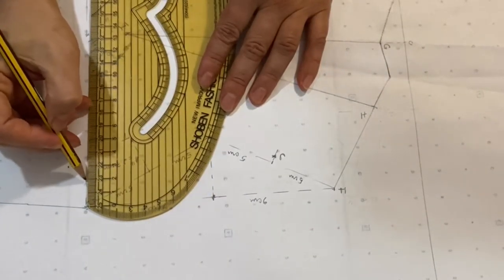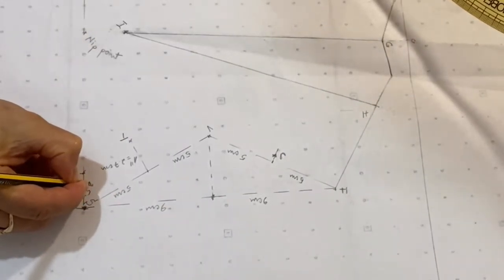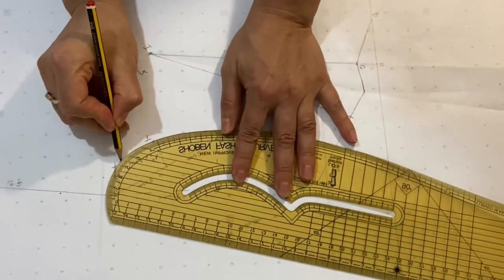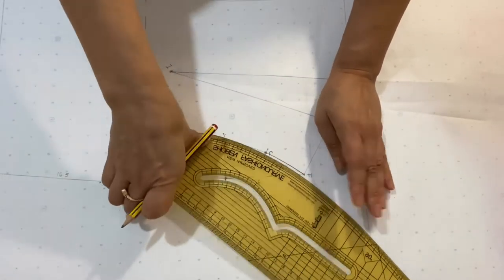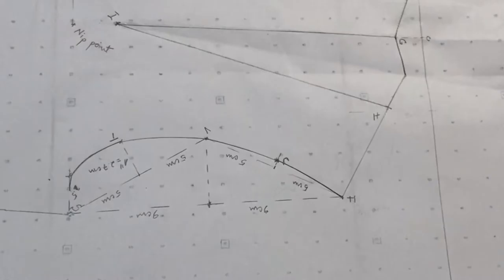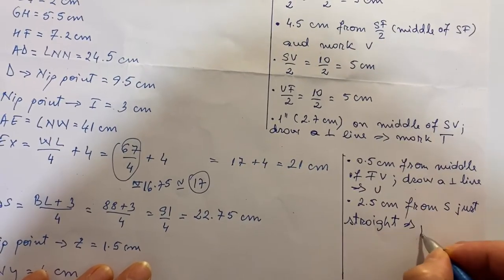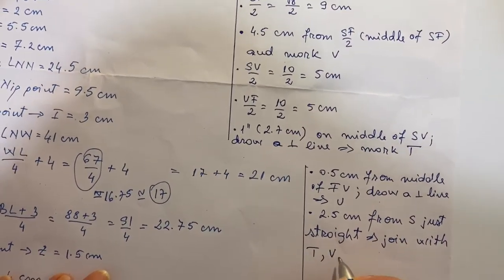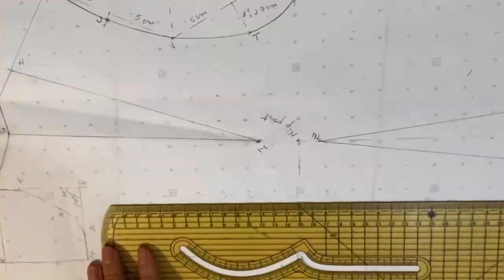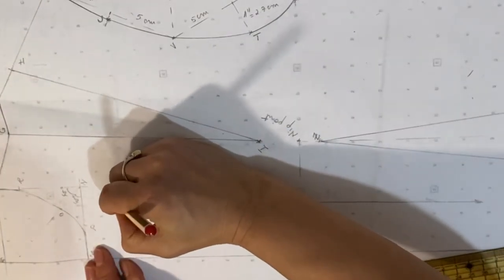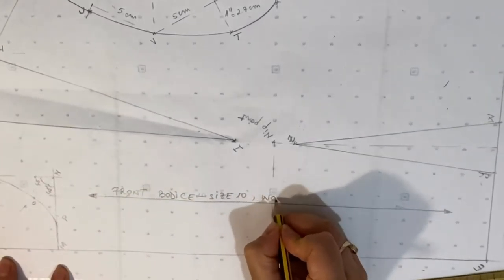Now I will start drawing the armhole line: go 2.5 cm straight from S and then join smoothly with T, V, and F. I will then indicate the grain line and name the pattern as front bodice size 10 women's wear.